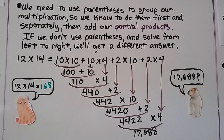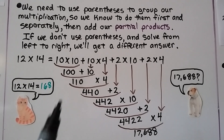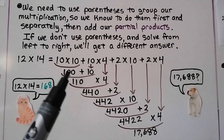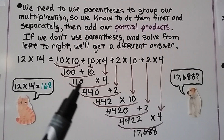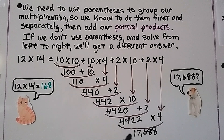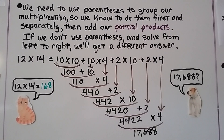We need to use parentheses to group our multiplication so we know to do them first and separately, then add our partial products. If we don't use parentheses and solve from left to right for 12 times 14, we would start with 10 times 10 (100), add 10 to get 110, then multiply by 4, and just keep going left to right — we'd end up with 17,688, not 168. So use parentheses, multiply within the parentheses first, find those partial products, then add all the partial products together to get your final answer.